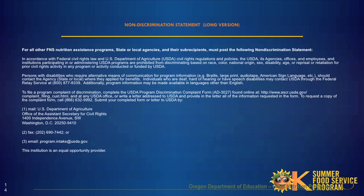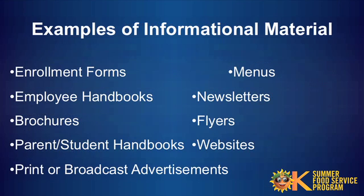This slide shows the long version of the non-discrimination statement. Sponsors must use the new long non-discrimination statement on all publications that are large enough to accommodate it, in the same size font as the text. The six protected classes relevant to child nutrition programs remain limited to race, color, national origin, sex, age, and disability. The non-discrimination statement must be included on program materials such as enrollment forms, menus, employee handbooks, newsletters, brochures, parent or student handbooks, print or broadcast ads, flyers, and websites.